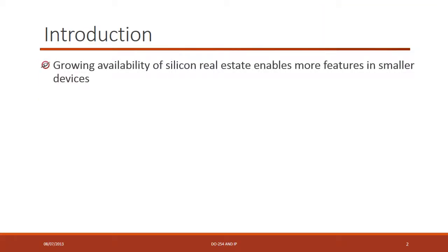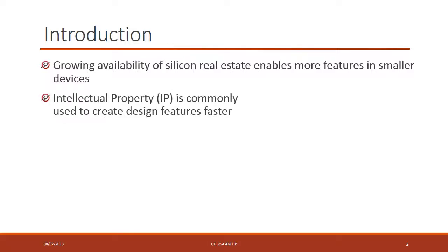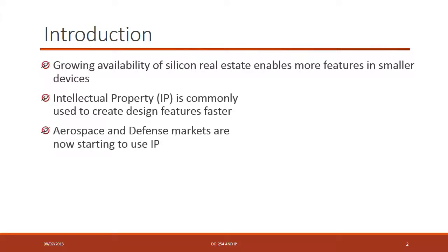As a basic overview, what we're seeing today is that the growing availability of silicon real estate — in other words, just the capacity of today's chips — enables more and more features in smaller and smaller devices. A trend that follows alongside this and actually supports it is the use of intellectual property, which we'll be referring to as IP. IP is very commonly used to create today's designs, enabling more features more quickly and typically more economically.